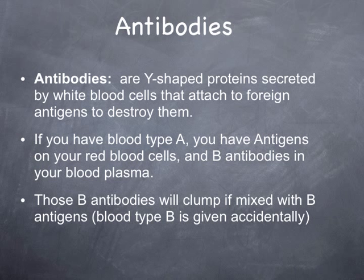So if a person with blood type A is accidentally given blood type B, a clumping reaction occurs, which can cause clotting and death. It's very important that we know a person's blood type prior to a transfusion.